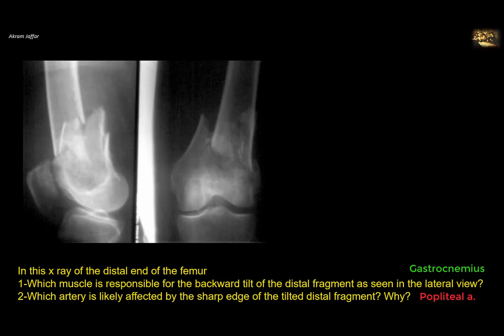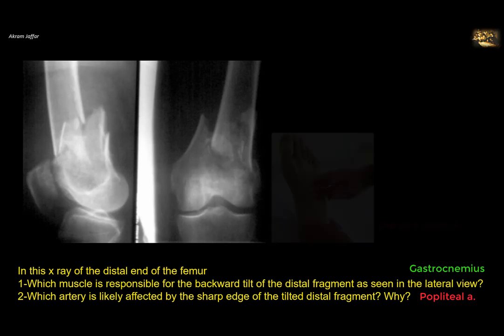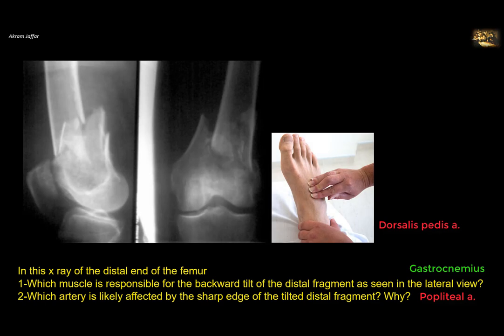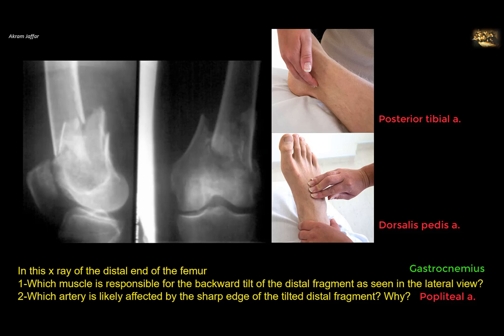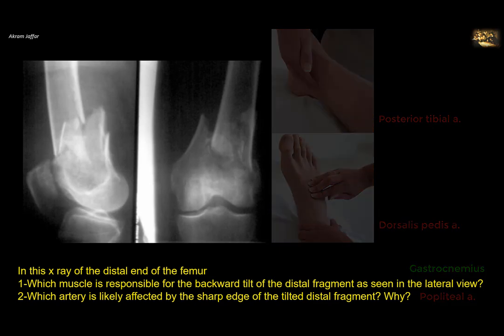In such a fracture, we must ensure the popliteal artery is intact by palpating the distal pulsations of its branches: the dorsalis pedis artery — the continuation of the anterior tibial artery on the dorsum of the foot, just lateral to the tendon of extensor hallucis longus — or the posterior tibial artery behind the medial malleolus.